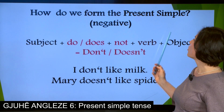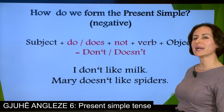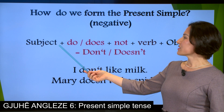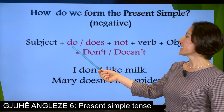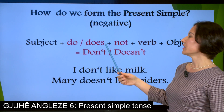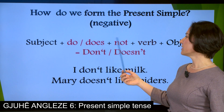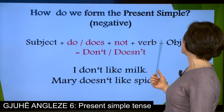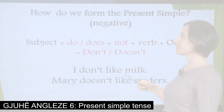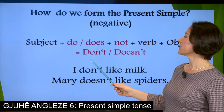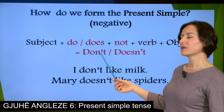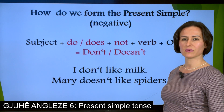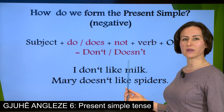How do we form the present simple negative? We make use of the subject plus do or does — in the third person singular — plus not, plus the verb and the object. The short form of do not is don't. The short form of does not is doesn't. These are called contractions.